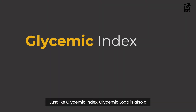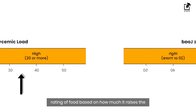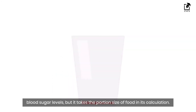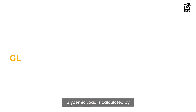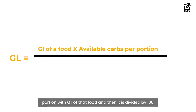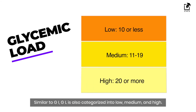Just like glycemic index, glycemic load is also a rating of food based on how much it raises blood sugar levels, but it takes the portion size of food into its calculation. Glycemic load is calculated by multiplying the available carbohydrates in a food portion by the GI of that food and then dividing by 100. Similar to GI, GL is also categorized into low, medium, and high.